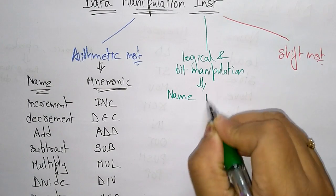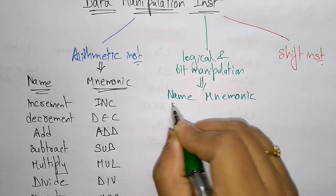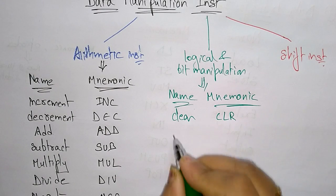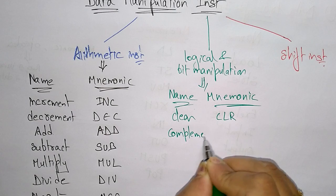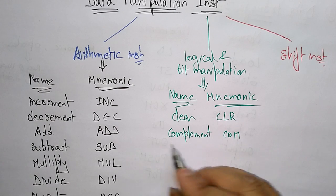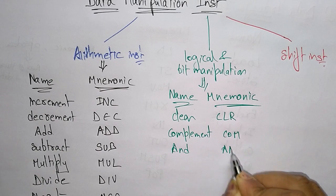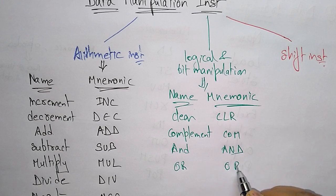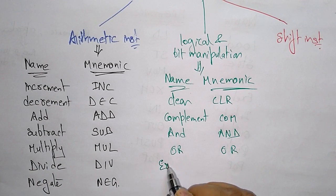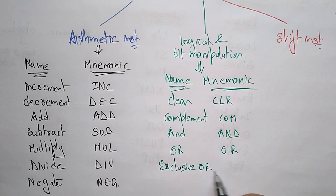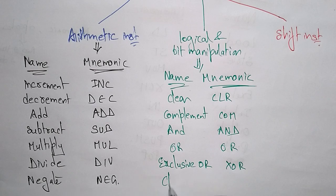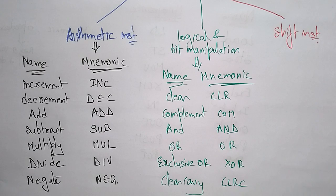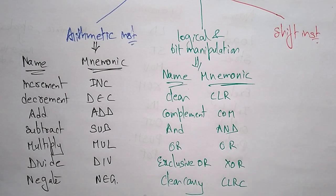Logical and bit manipulation instructions include: Clear (CLR), Complement (COM), AND (AND), OR (OR), Exclusive OR (XOR), and Clear Carry (CLRC). Enable interrupt and disable interrupt are also included in this category.